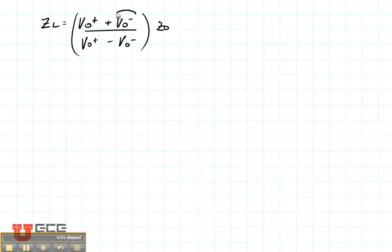The next thing that we need to do is to solve for V0 minus as a function of V0 plus. We're going to solve for V0 minus.